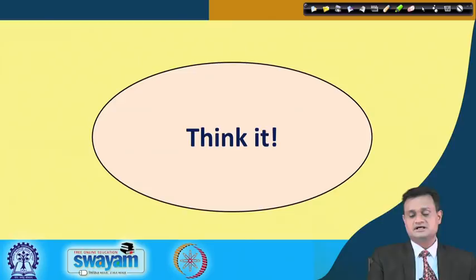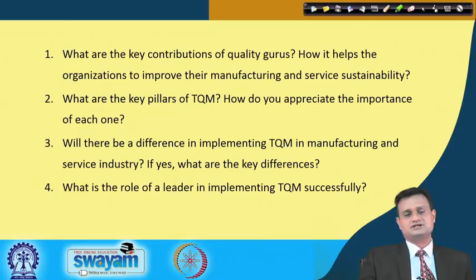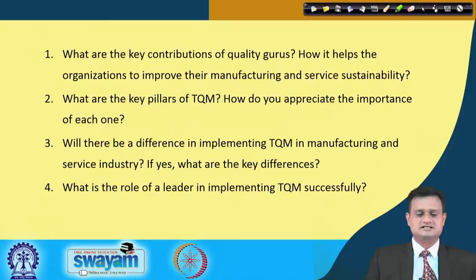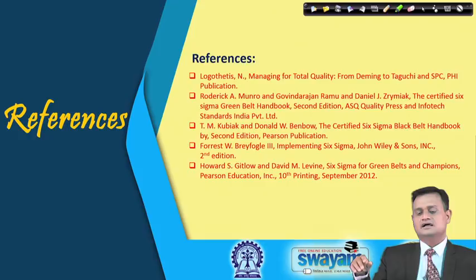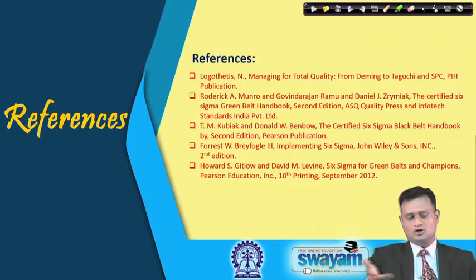Before we end, reflect upon these questions: What are the key contributions of quality gurus and how do they help the organization improve manufacturing and service? What would be the differences? What is the role of a leader in implementing TQM successfully? These are the references for deeper learning — Logotheties is a very good book on TQM, and you can also refer to Forrester on implementing Six Sigma and other books on Green Belt and Black Belt Six Sigma.